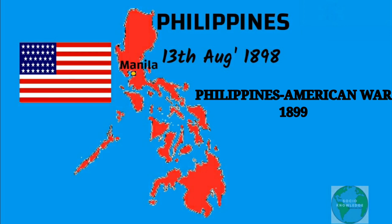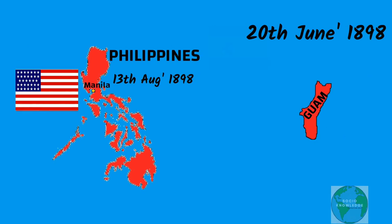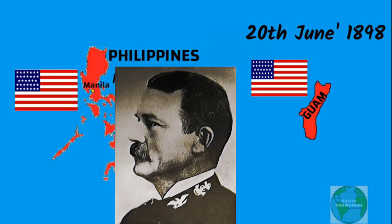We will discuss the Philippine-American War in the next video. On 20th June 1898, the island of Guam was captured by Captain Henry Glass. The capture of Guam was a bloodless conflict and the Spanish troops surrendered without a fight. This brought an end to the Pacific theater of the Spanish-American War.